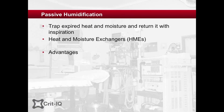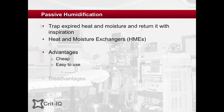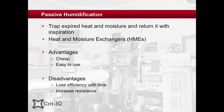The advantages of HMEs are that they are cheap and easy to use, and are very useful for short periods of ventilation. However, as their use is prolonged they lose efficiency and can progressively increase the resistance to gas flow. HMEs also add weight to the tube, which can be a factor in pressure ulceration and tube dislodgement, and they add dead space to the circuit, which can be important particularly in children.